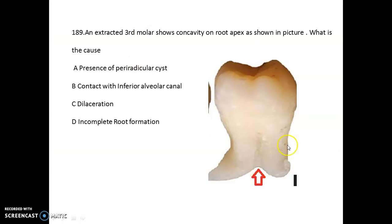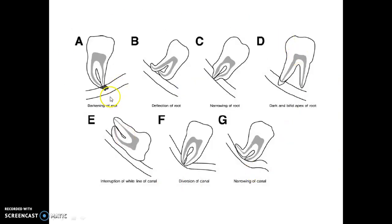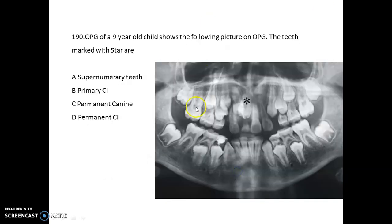This is an extracted third molar showing concavity on the root apex. The cause is contact with the inferior alveolar nerve canal. Important radiographic relationships to note include: darkening of roots, deflection of root, narrowing of root, dark and bifid apex of root, interruption of the white line of the canal, diversion of the canal, and narrowing of the canal. These are the important relationships between the nerve canal and the third molar.